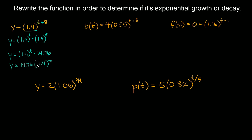I'm going to flip the position to match the standard form y = a(1 ± r)^t, where the number a goes on the left. So we write y ≈ 14.76 × 1.4^t. Now t is isolated, and we look at what's inside the parentheses: 1.4 is bigger than 1, so this original function shows exponential growth.